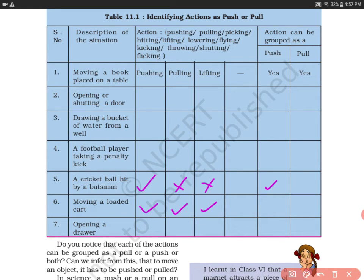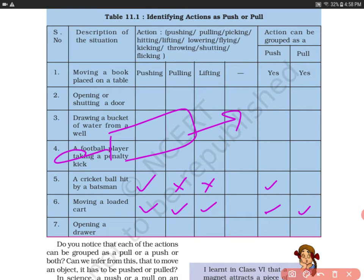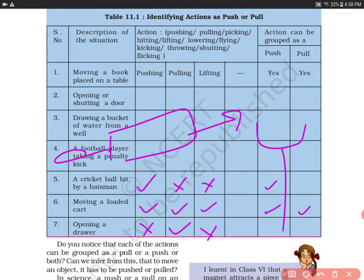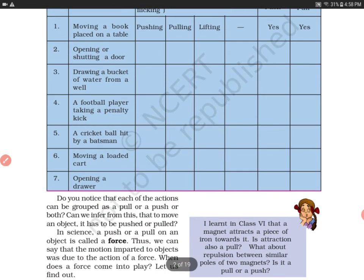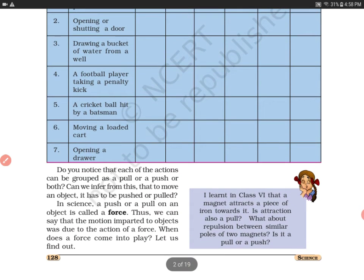When moving a cart, the action can be push or pull — you can move the cart either way. For opening a drawer, we always pull the drawer towards ourselves; we are not pushing and not lifting. So the action here will only be pulling.